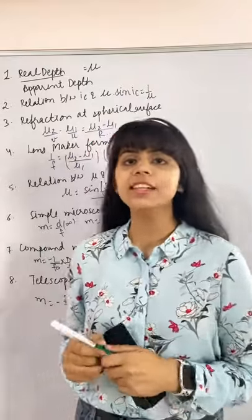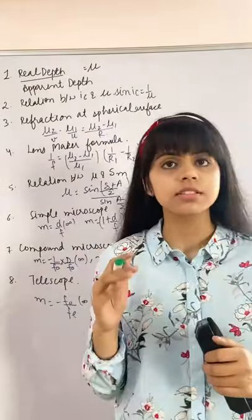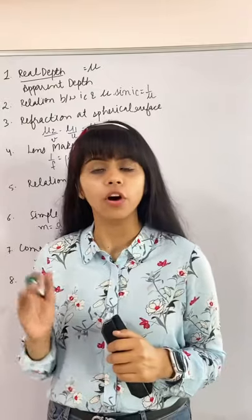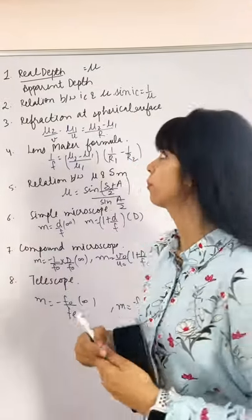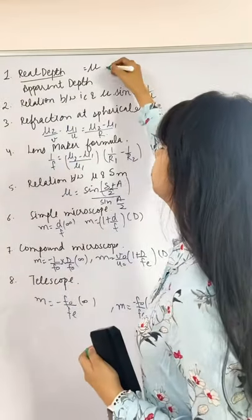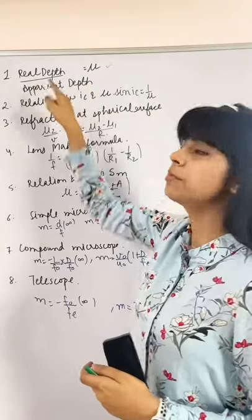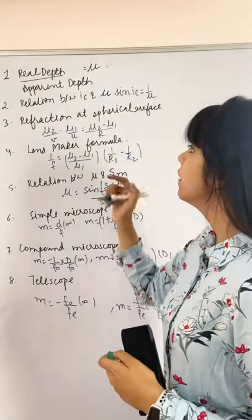Everyone, welcome back to my channel. In today's class, we will discuss some most important derivations of Class 12 Physics Ray Optics. First would be relation between refractive index, real depth, as well as apparent depth. Next would be relation between critical angle and refractive index.